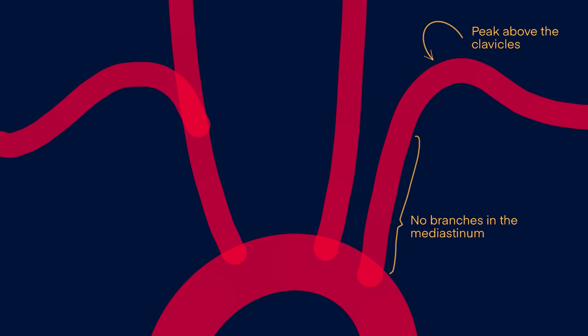This is important because if you're putting in central lines and you see that your line goes above the clavicle, you may have put it in the artery and not the vein. The subclavian vein stays very close to the clavicle and doesn't have this little peak that goes above.